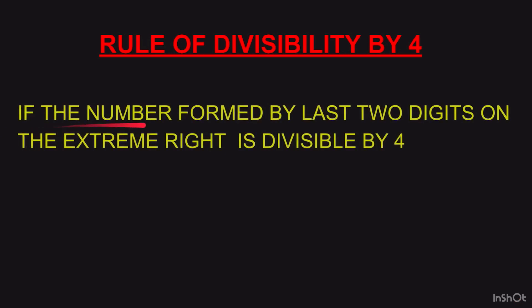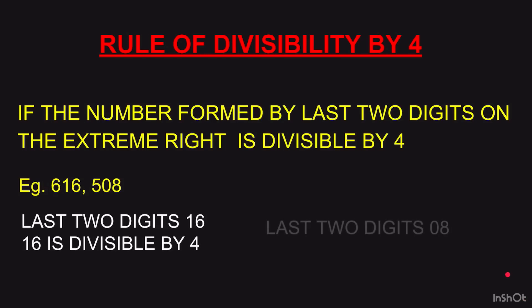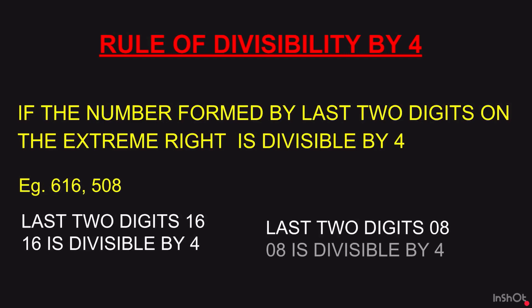Rule of divisibility by 4: if the number formed by the last two digits on the extreme right is divisible by 4, then the number is divisible by 4. Example: 616 — last two digits are 16, and 16 is divisible by 4 (4 fours are 16), so 616 is divisible by 4. For 508 — last two digits are 08, and 8 is divisible by 4 (4 twos are 8), so 508 is also divisible by 4.